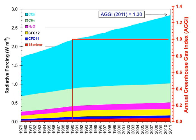Greenhouse gases are those that absorb and emit infrared radiation in the wavelength range emitted by Earth. In order, the most abundant greenhouse gases in Earth's atmosphere are water vapor, carbon dioxide, methane, nitrous oxide, ozone, chlorofluorocarbons, and hydrofluorocarbons including HCFCs and HFCs. Atmospheric concentrations are determined by the balance between sources — emissions from human activities and natural systems — and sinks, the removal of the gas from the atmosphere by conversion to a different chemical compound or absorption by bodies of water.